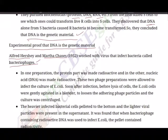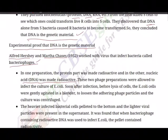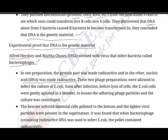In one preparation, the protein part of the bacteriophage was made radioactive, and in the other, the nucleic acid was made radioactive. DNA contains phosphorus, so they used a radioactive isotope of phosphorus (P-32). Proteins contain sulfur, so they used a radioactive isotope of sulfur (S-35) to label the protein coat.